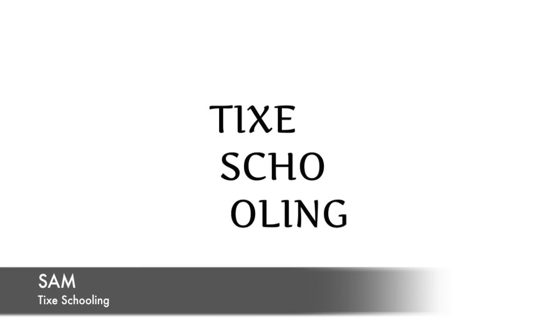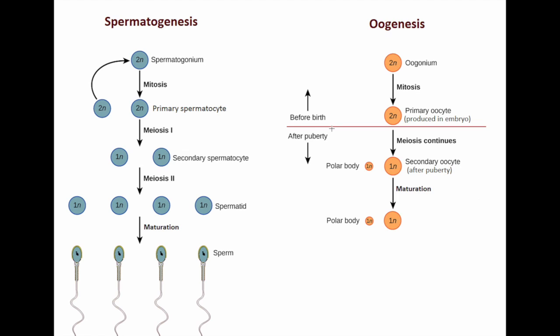Hello Learners, this is Sam from Tag2Schooling. Today we are going to talk about gametogenesis, which is the process through which we get sperms or gametes. Gametogenesis is divided into two types: in the male it is called spermatogenesis, and in the female it is called oogenesis. Let's start with the male.